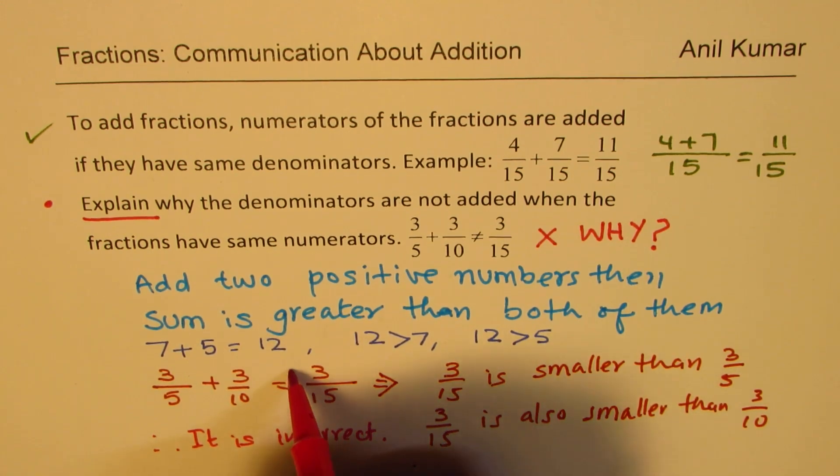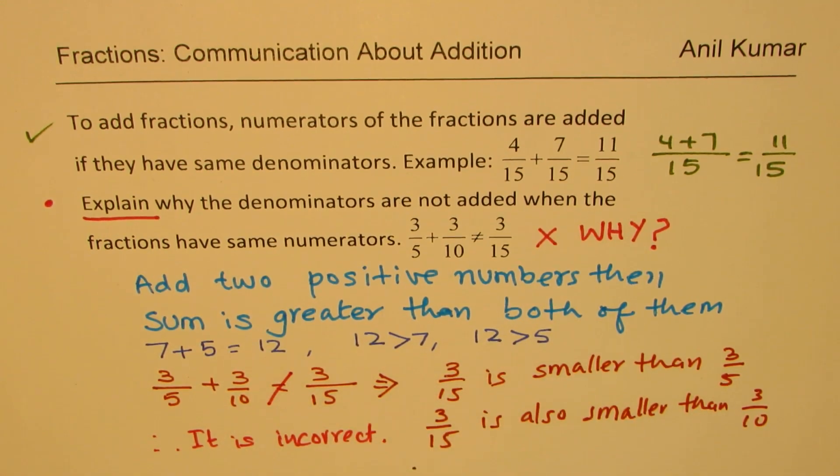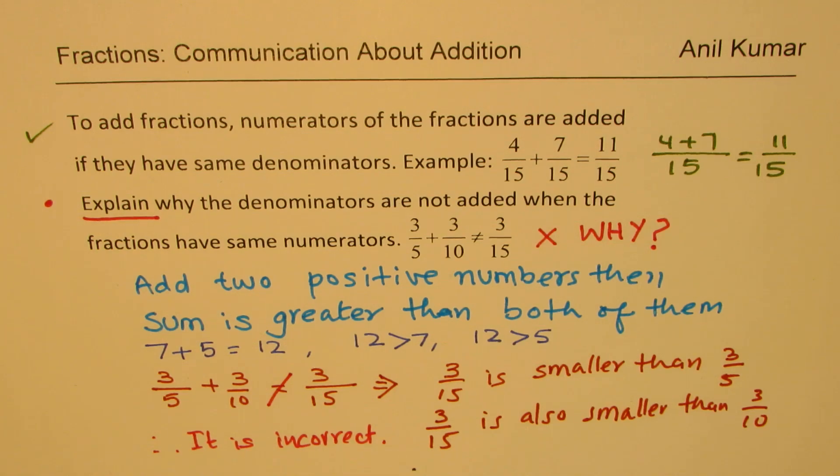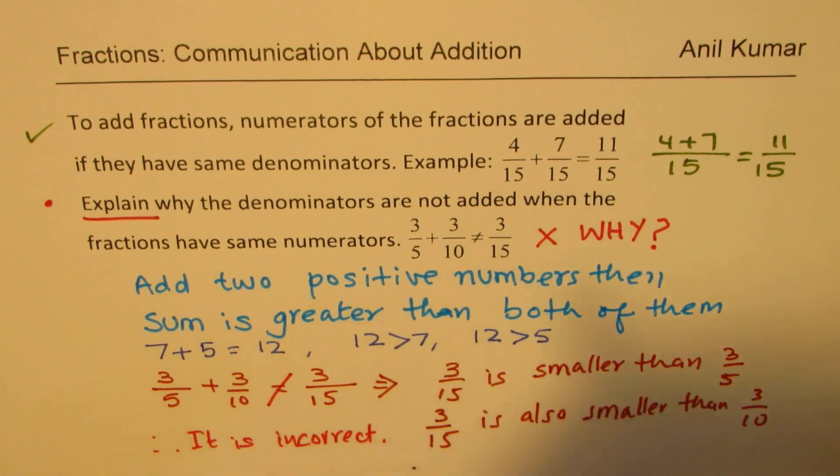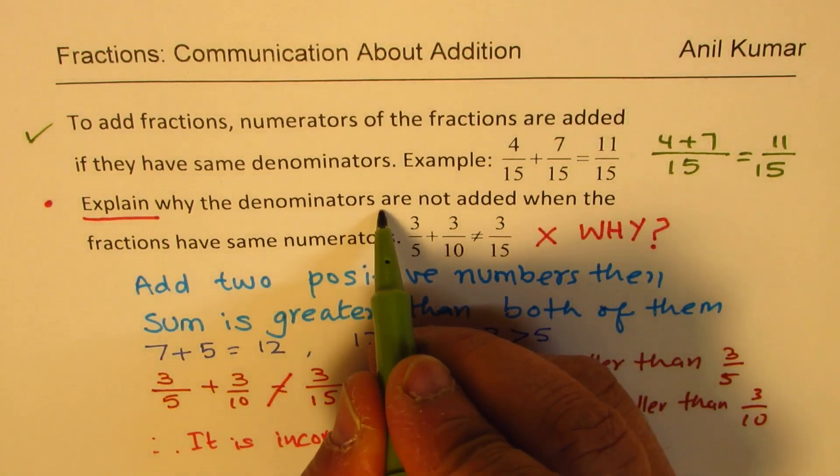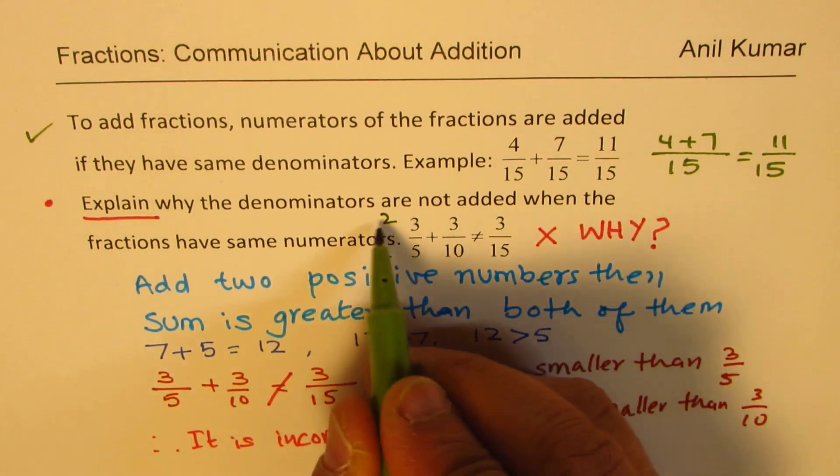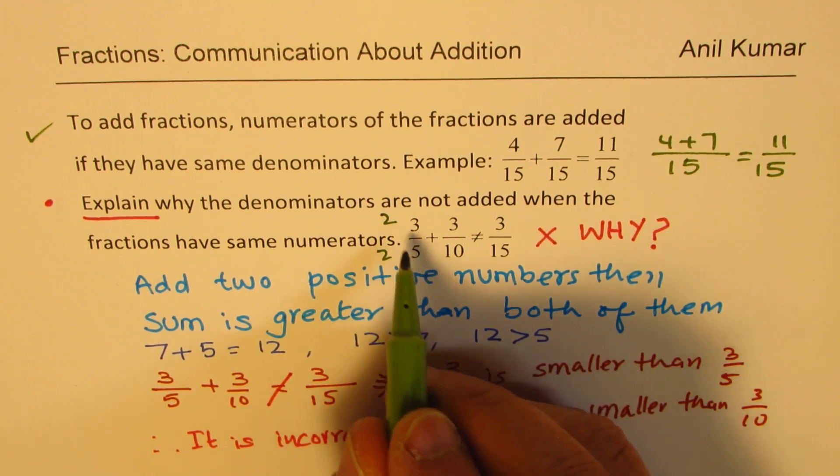Now that is not possible. When you add, you should get a bigger answer, a larger number. But here you get a smaller number, and therefore this is wrong. So what will you do to add them? We need to make their denominators the same. So what we will do here is we'll multiply both terms by 2 to make the denominator the same.